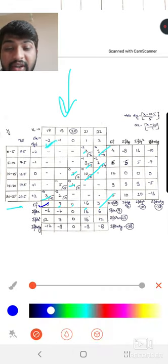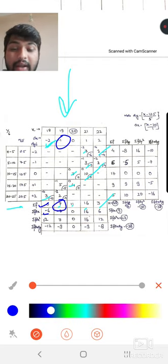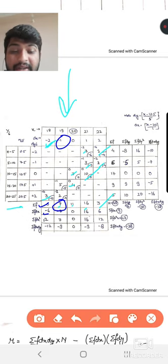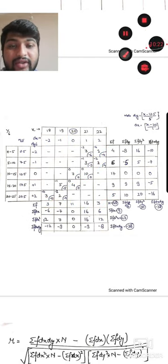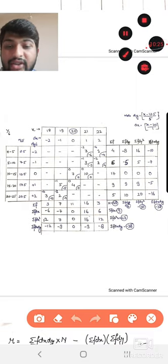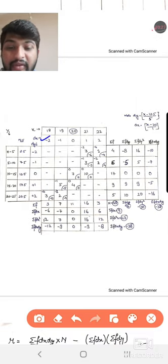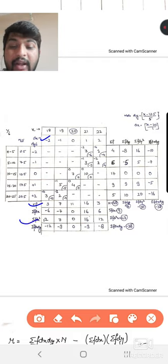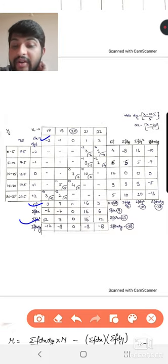dx value is minus 2. We multiply with frequency 3. Minus 2 into 3 value is minus 6. In this way you multiply this value with frequency. You will get the value as summation fdx. Then as you applied the concept, you will square dx. Minus 2 frequency is 3. Multiply to get fdx square. 2 square is 4. 4 into 3 equals 12.